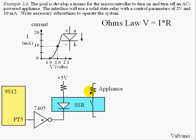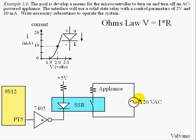We have an appliance which is modeled here as a resistive load. This might be a light bulb, a motor, or a fan — something that would be driven by an AC source. This part of the circuit models the AC source, essentially a plug where this is the black wire and this is the white wire of a typical household 120 volts AC, 60 hertz source.